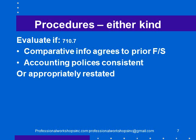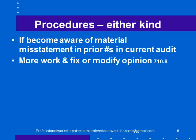When we get to the procedures, it doesn't really matter whether they're comparative or corresponding — we do effectively the same procedures in both. We have to evaluate whether the comparative information agrees to the prior financial statements, consider whether accounting policies are consistent between the years, and if not, ensure they're appropriately restated. In either case, if we become aware of a material misstatement in the prior numbers during the current audit, we would have to do more work and fix it or modify our opinion.